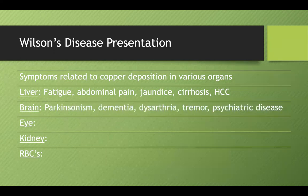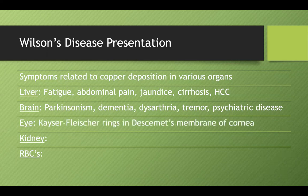In the brain, you can get several psychiatric and neurological conditions such as dementia, tremor, Parkinsonism, and mood disorders. In the eye, you're going to get the classic Kaiser-Fleischer rings in Descemet's membrane of the cornea.